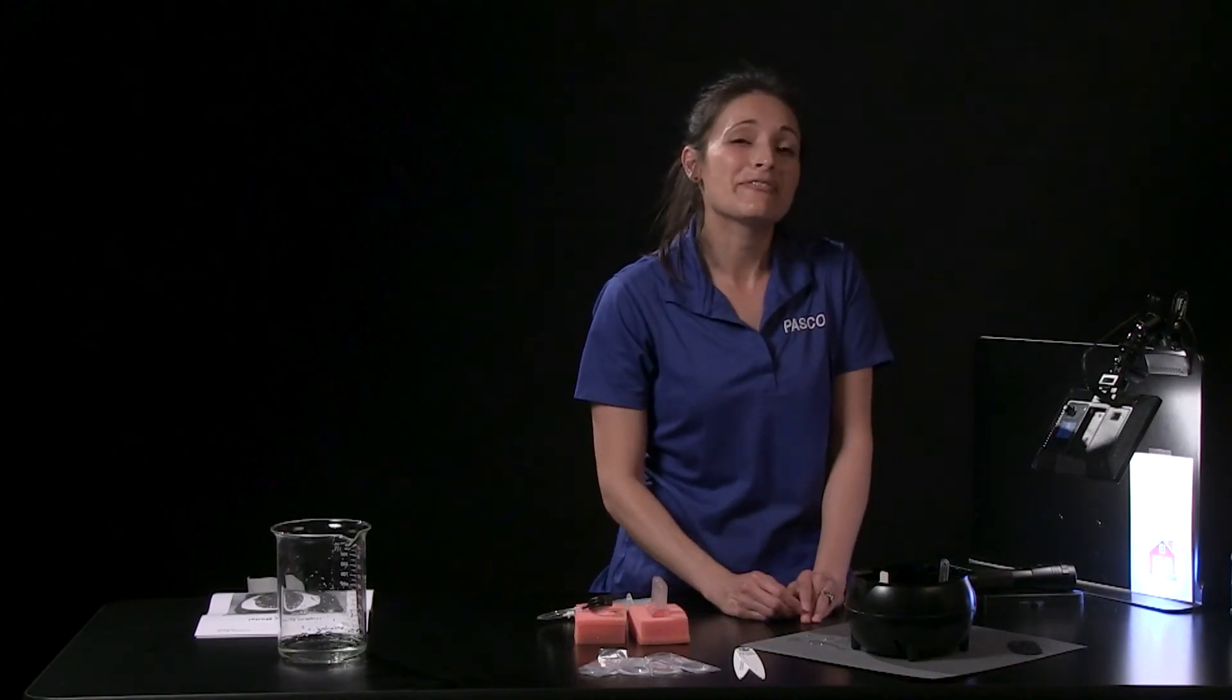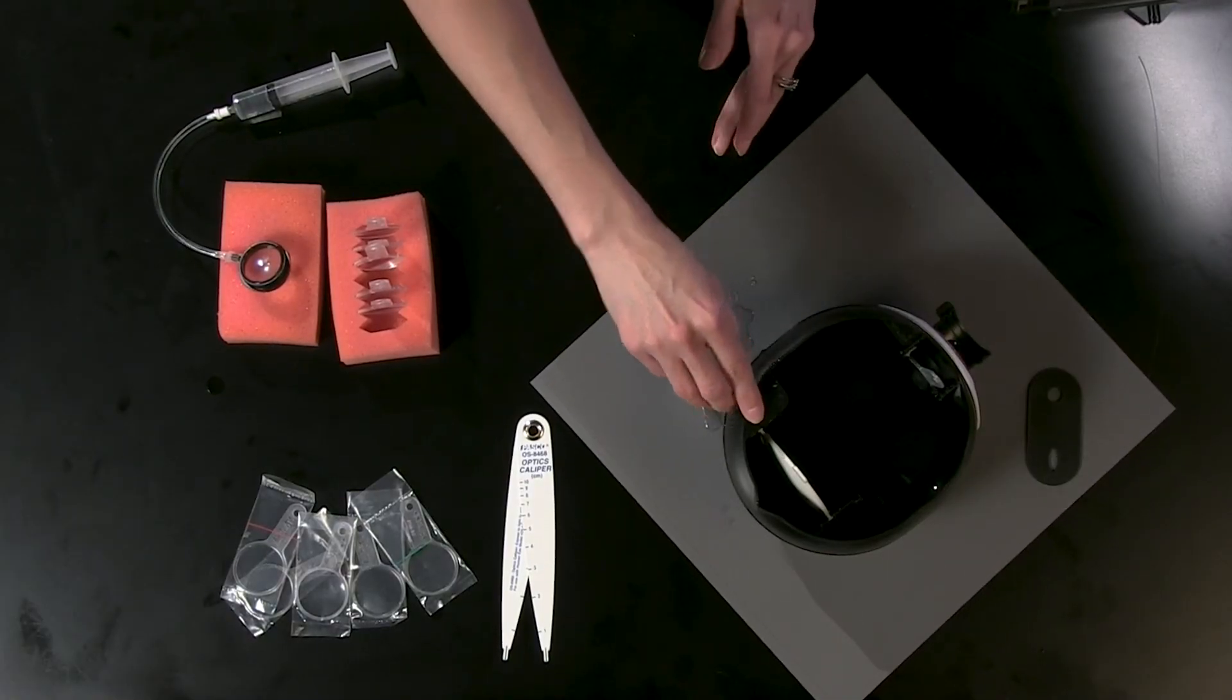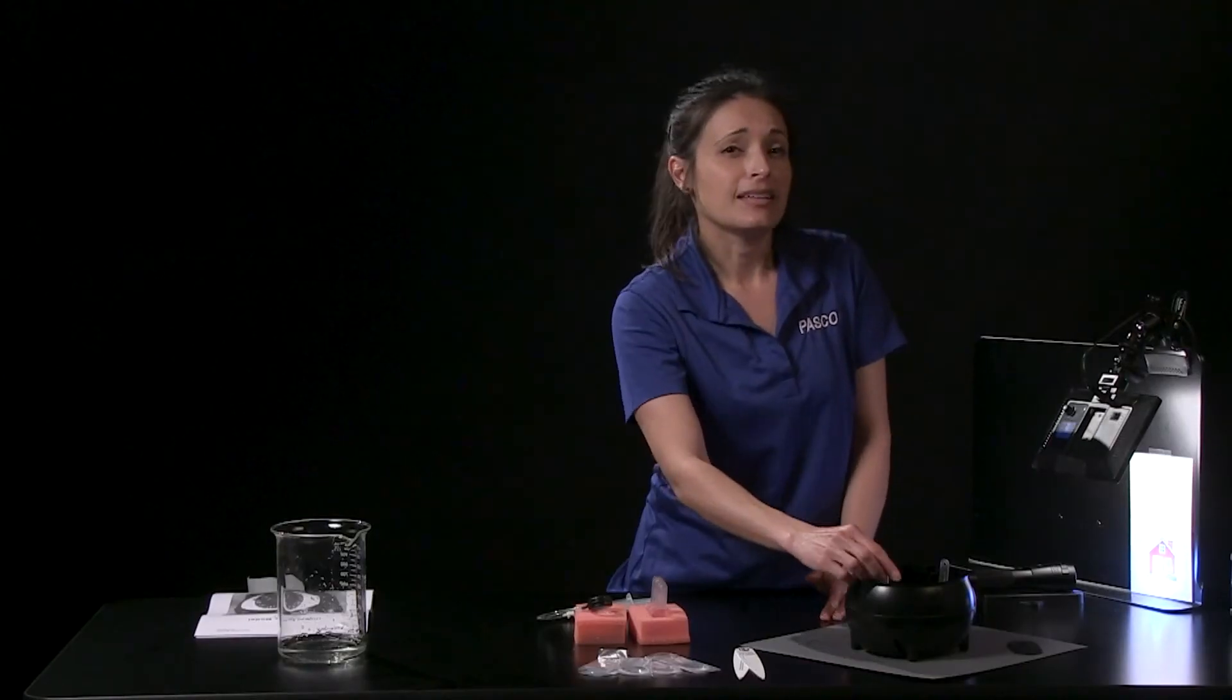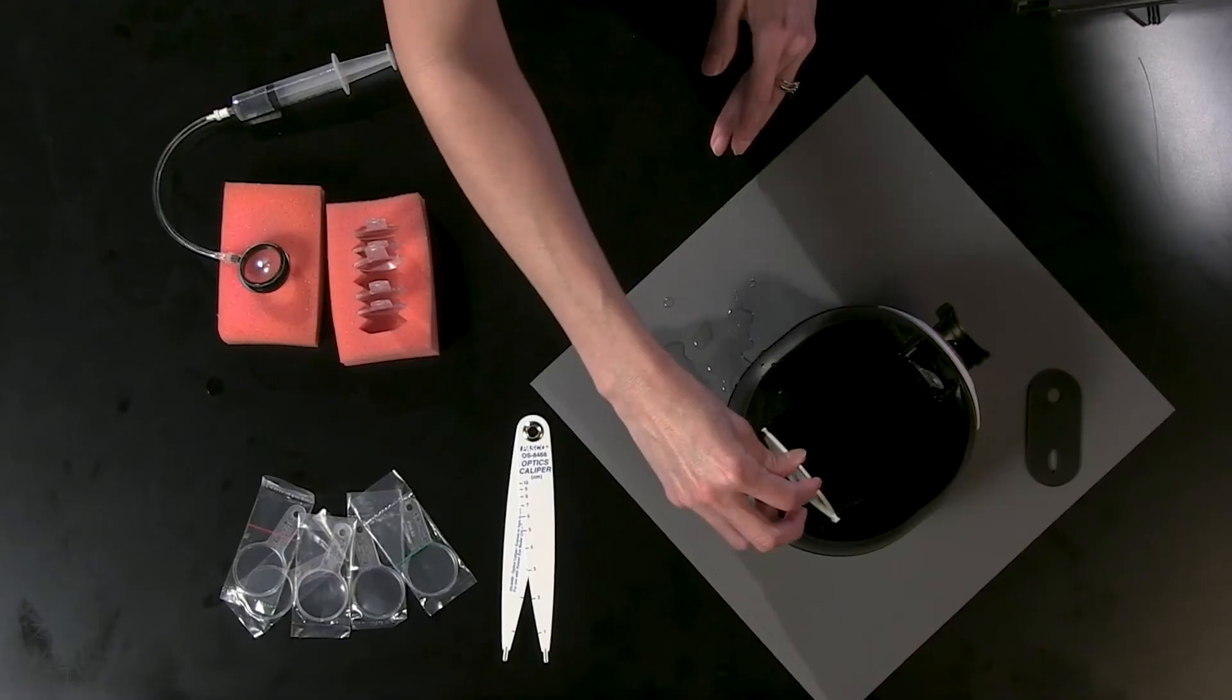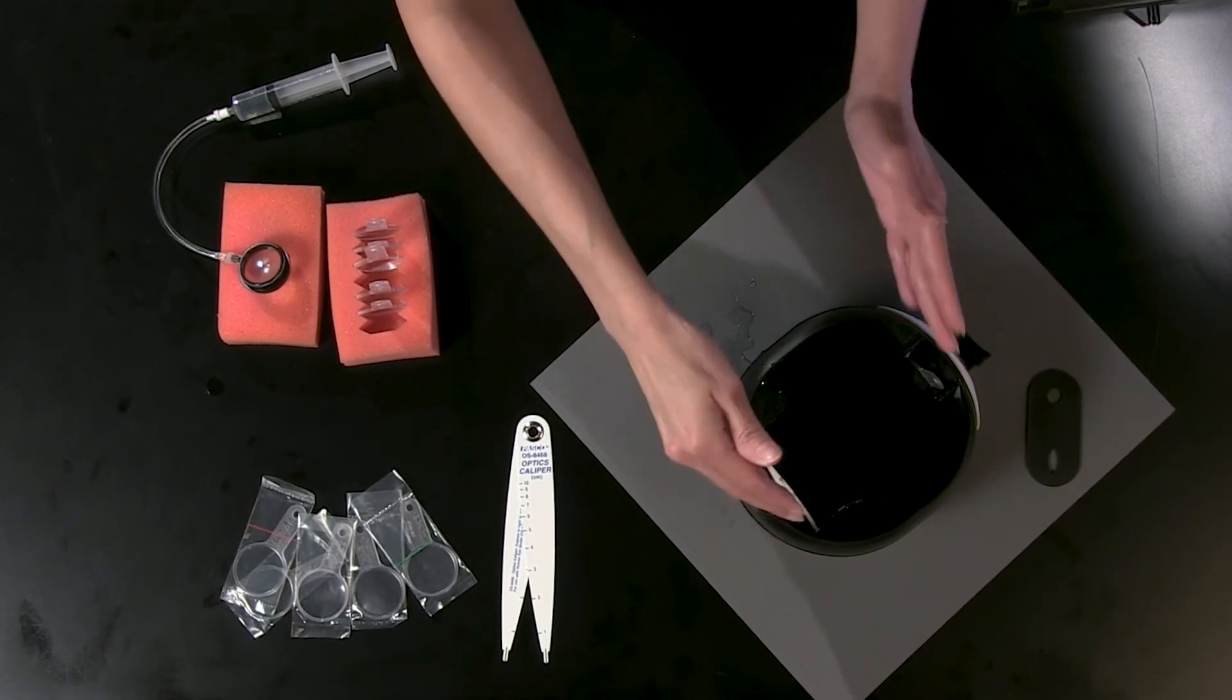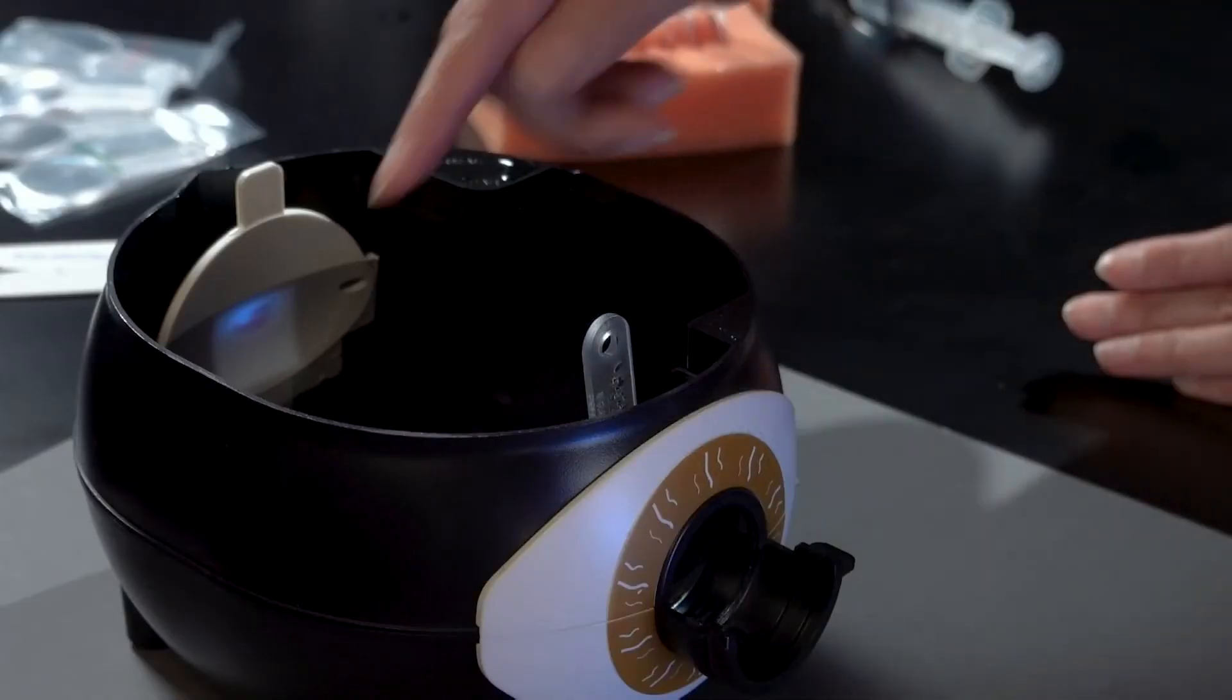Let's investigate nearsightedness and farsightedness. The retina can be moved from the normal position to the near or far position to simulate a nearsighted eye or farsighted eye. A nearsighted person has an eyeball that is too long, causing the image of distant objects to be formed in front of the retina.